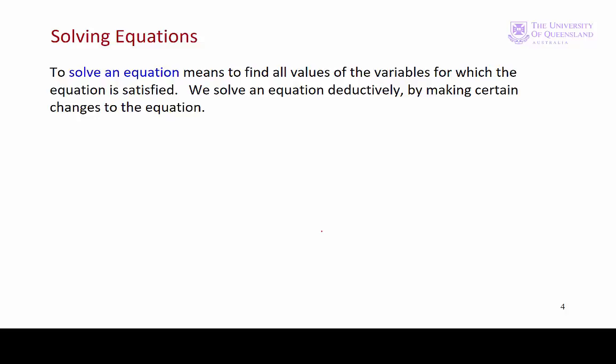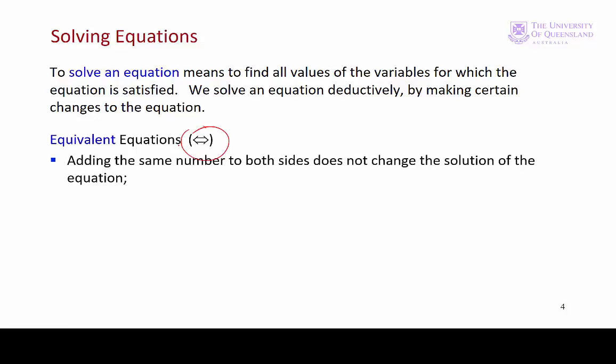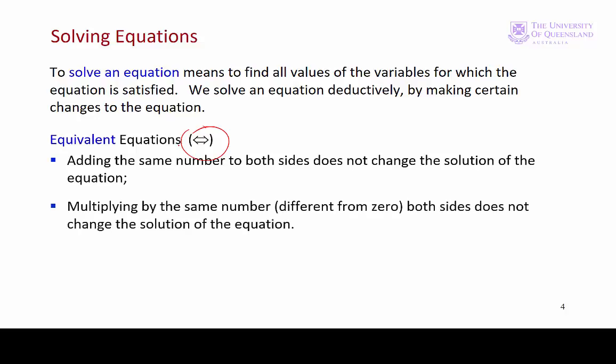What are these operations? There are two types. The first type is a group of three operations that will give rise to an equivalent equation. The first of these three operations is if we add the same number to both sides of an equation, that doesn't change the solution. If we multiply both sides of the equation by a number, a number different from zero, that gives us an equivalent equation.